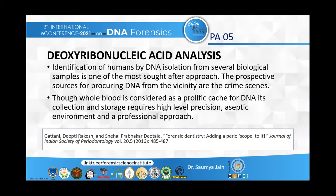Coming to deoxyribonucleic acid analysis, identification of humans by DNA isolation from several biological samples is one of the most sought-after approaches. The prospective sources for procuring DNA are crime scenes. Though whole blood is considered a prolific cache for DNA, its collection and storage requires high-level precision, an aseptic environment, and a professional approach.